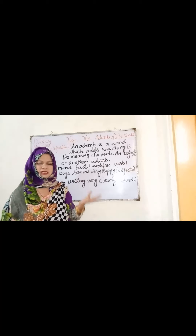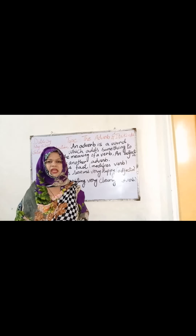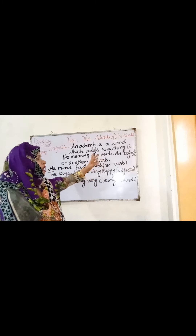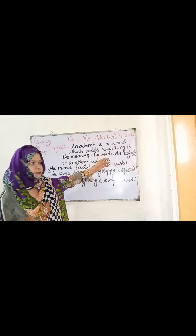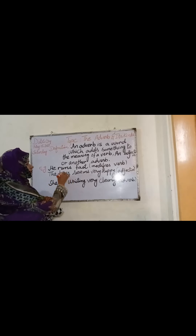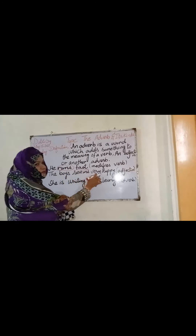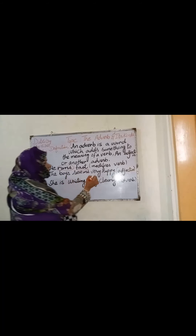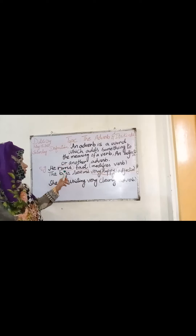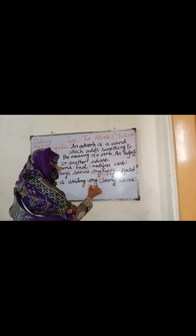She is speaking loudly — 'loudly' is your adverb. He is running fast — 'fast' is your adverb. The word 'fast' modifies the verb 'run.' The boy seems very happy — 'very' modifies the adjective 'happy.' She is writing very clearly — 'very' modifies the adverb 'clearly,' so an adverb can modify another adverb.